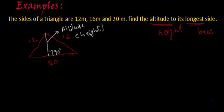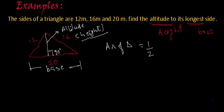And where do we use this height or altitude? We use altitude, that is height and base, to find the area of the triangle. And what is the formula for the area of the triangle? Area of a triangle is 1 by 2, base multiplied by height.